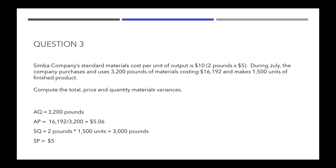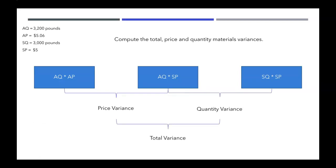Now that we have actual quantity, actual price, standard quantity, and standard price, we can fill those into formulas to figure out our variances. We take actual quantity times actual price, subtract actual quantity times standard price — that gives you the price variance. Then actual quantity times standard price minus standard quantity times standard price gives you the quantity variance. For the price variance, what changes is the price (actual vs. standard). For the quantity variance, what changes is the quantity (actual vs. standard). We use those to find total variance.